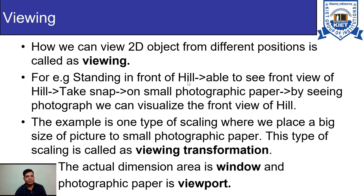For example, we are standing in front of a hill and we can see the front view of the hill. We take a snap on photographic paper, and by seeing the photograph we can visualize the front view of the hill. This is a kind of viewing — we are seeing something on the world coordinate system, selecting some portion of that picture, and displaying it on the display device. Viewing something on the display device is called two-dimensional viewing.